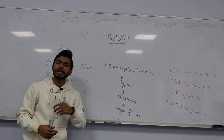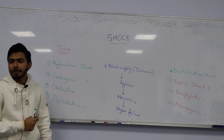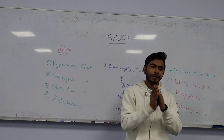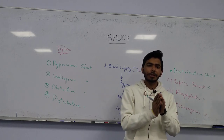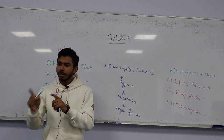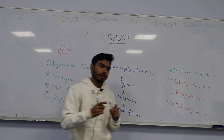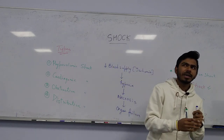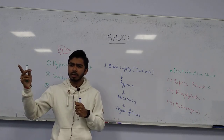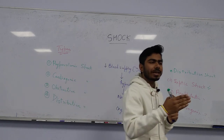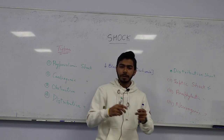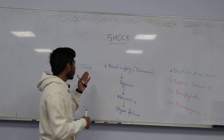Gram-negative bacteria can give septic shock. In all types of shock, blood pressure will be decreasing. The normal blood pressure is 120/80 mmHg. If systolic blood pressure falls below 80, the person is going into shock. Depending on the causes, there are different kinds of shock.